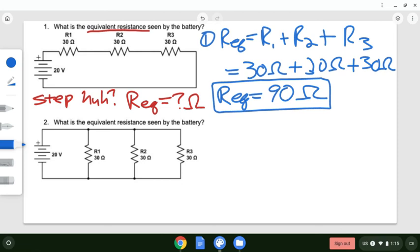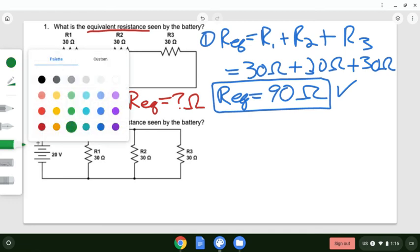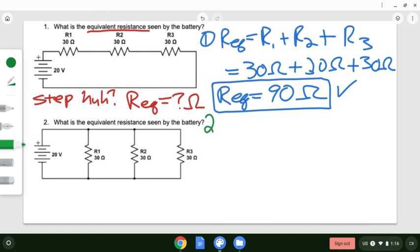For the second problem, now we're trying to do the same thing. So look at these resistors. How are these guys arranged? These guys are all in parallel. So think, what's your rule for adding resistors in parallel?